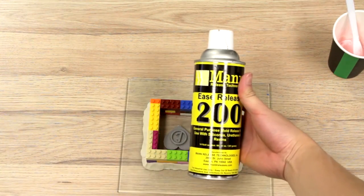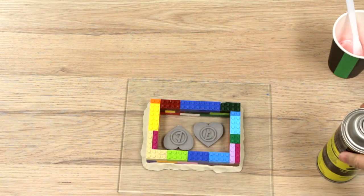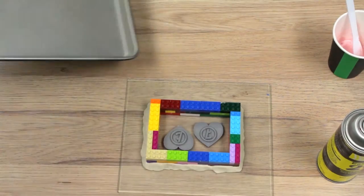Before we proceed to pouring the silicone mixture in, we will have to do a quick spray with a mold release. One layer should be good.